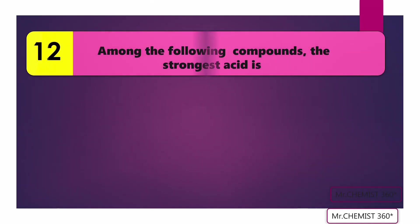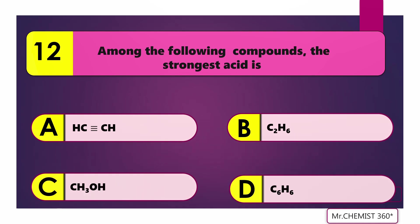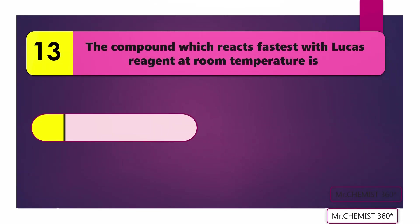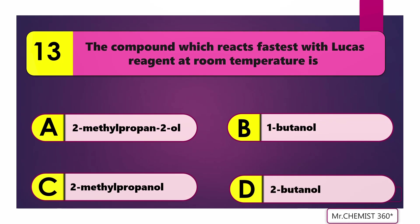Question 12: Among the following compounds, the strongest acid is? Answer: Methyl alcohol. Question 13: The compound which reacts fastest with the Lucas reagent at room temperature is? Answer: 2-methyl-propane-2-ol.